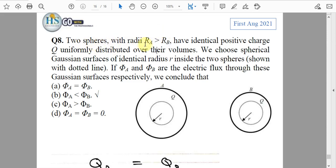Two spheres with radii R_A greater than R_B have identical positive charge uniformly distributed over their volumes. We choose spherical Gaussian surfaces of identical radius r inside the two spheres shown with dotted line. If φ_A and φ_B are the electric fluxes through these Gaussian surfaces respectively, we conclude that: